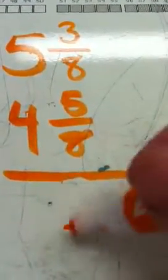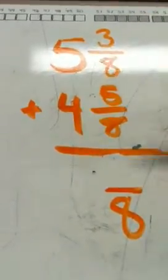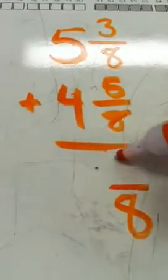So again, I'm going to put down my denominator first. So my denominator on this problem is an eight. I'm going to go ahead and record it. And then I'm going to look at my numerators. I have three and five. I'm going to go ahead and add them. So I have three plus five and that's eight.